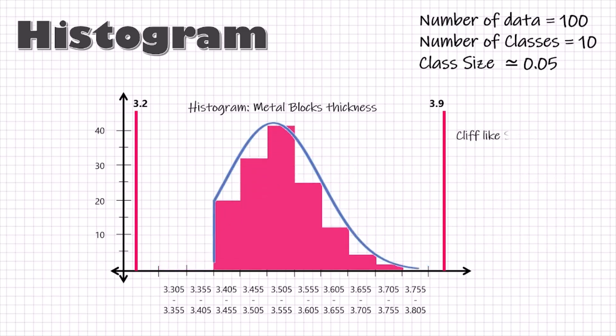If the shape is cliff-like, it could mean that the process is not capable of meeting product specification and a portion of the production that is not good is being inspected out. So, the process is relying on the inspection to meet the specifications.